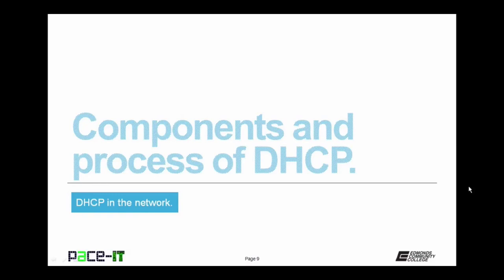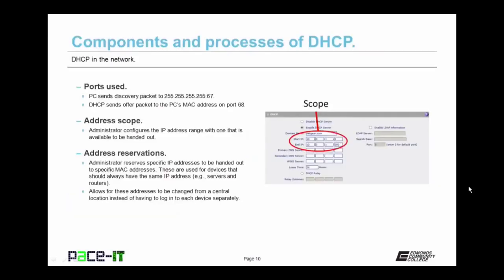Now let's talk about components and the process of DHCP. We begin with the ports used. The PC sends its discovery packet out on the broadcast address 255.255.255.255 on UDP port 67. When the DHCP server responds, it responds to the PC's MAC address — Media Access Control address — on UDP port 68. The PC uses UDP port 67; the DHCP server responds on UDP port 68. That's important to remember.